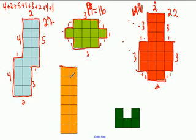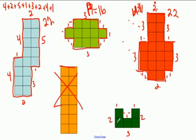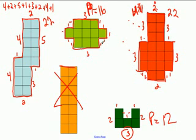This next shape has sides of one, one, one, one, one, one, two, three, two. Adding those up: three, four, five, six, seven, eight, nine, ten, eleven, twelve — twelve units. The most important part is remembering to count all of those little one-unit sides. Every side is important.